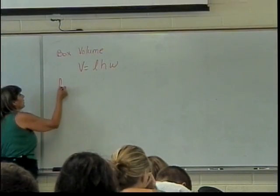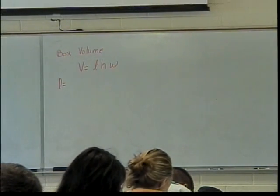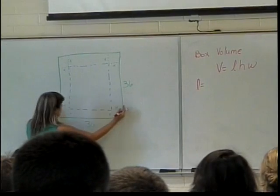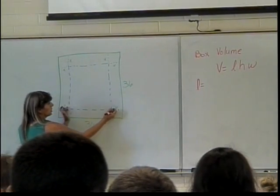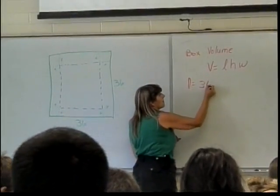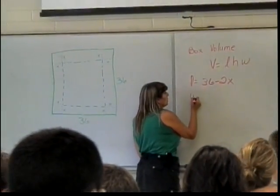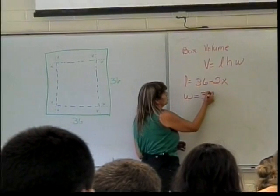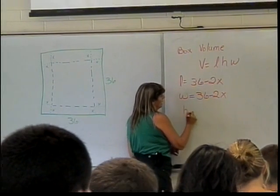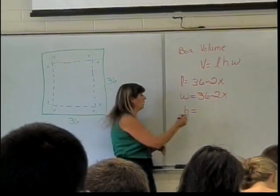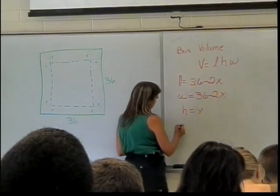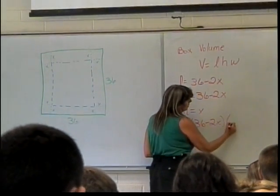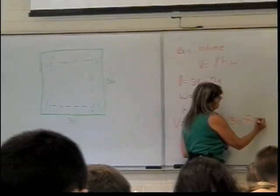What is the length for my box when I folded everything up? 36 minus 2x. Yeah. 36 was what I started with. To get to the blue part, I took x out on each side, so it's going to be 36 minus 2x. What's going to be the width of my box? 36 minus 2x. Same thing, 36 minus x on each end, so 36 minus 2x. And what's going to be the height of my box? X. Because when I fold these up, they're x high. So my formula for volume of this box is 36 minus 2x times 36 minus 2x times x.